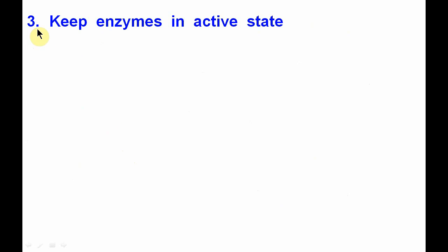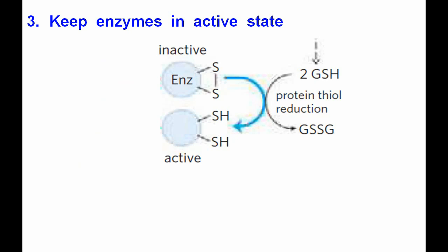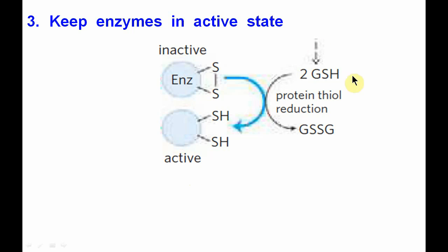The third important function of glutathione is to keep enzymes in their active state. Some enzymes contain the sulfhydryl group in their active site, and they only become active when the sulfhydryl groups are in the reduced state. To keep this sulfhydryl group in a reduced state, reduced glutathione is very important. Here you can see the inactive enzyme in the oxidized form is reduced so that the enzyme becomes active. There are various reactions where reduced glutathione keeps enzymes in their active state.